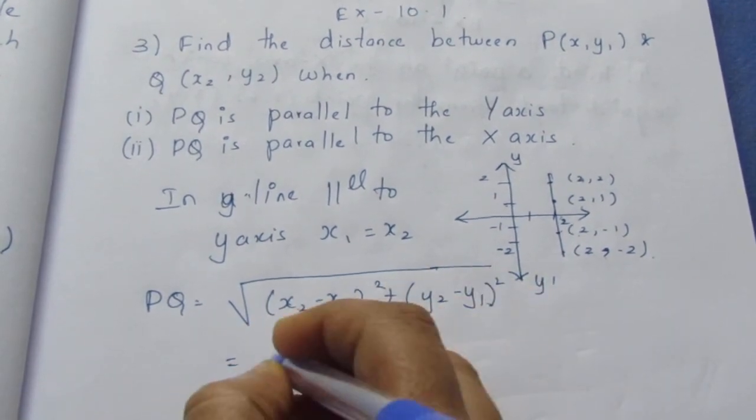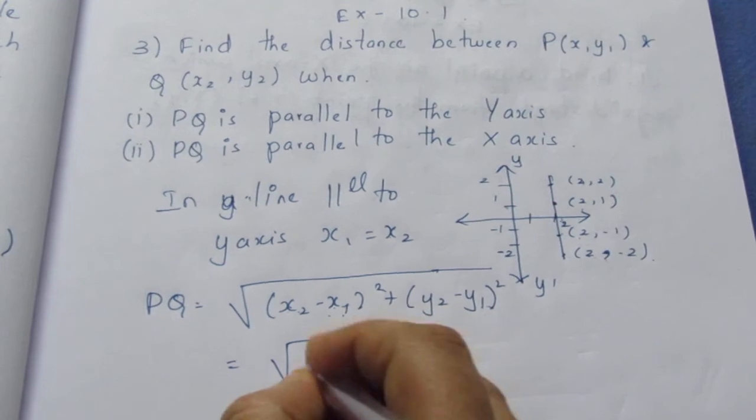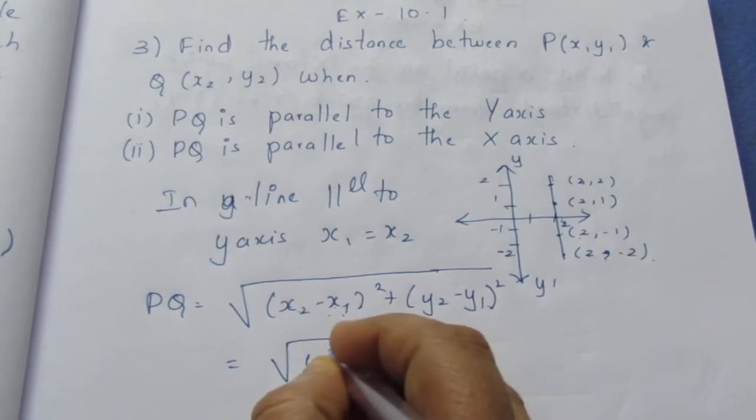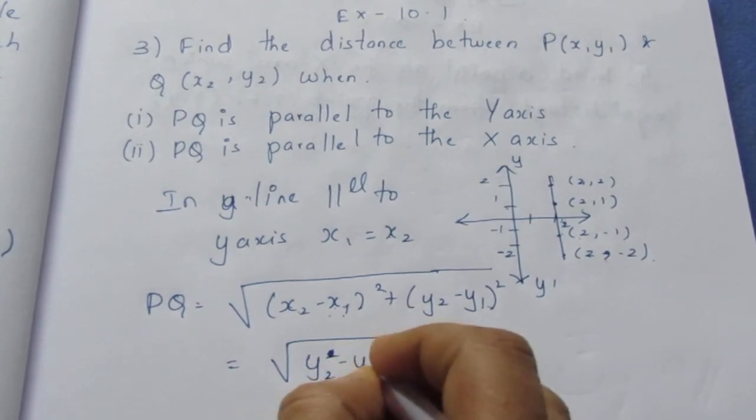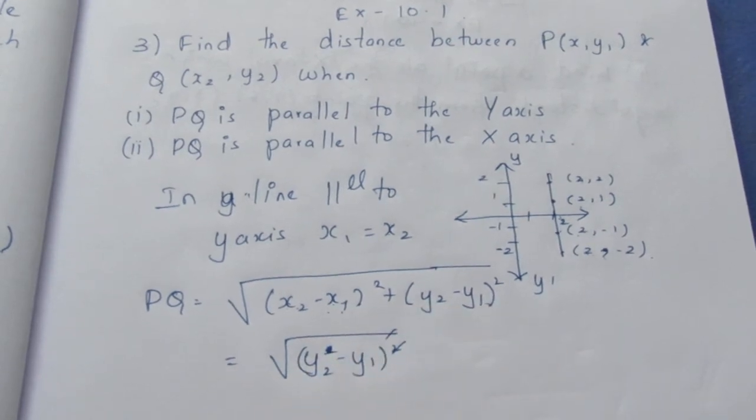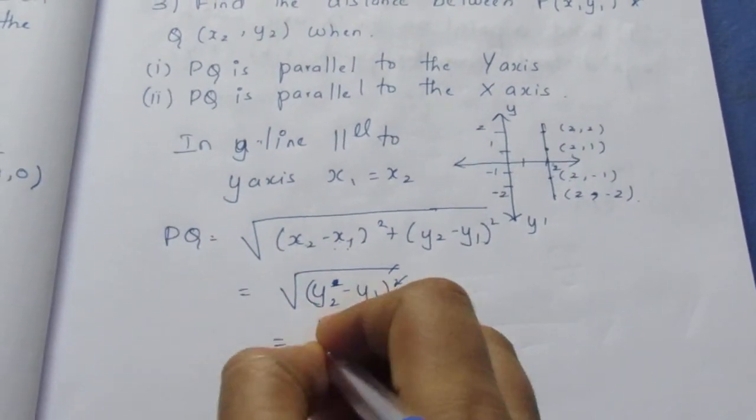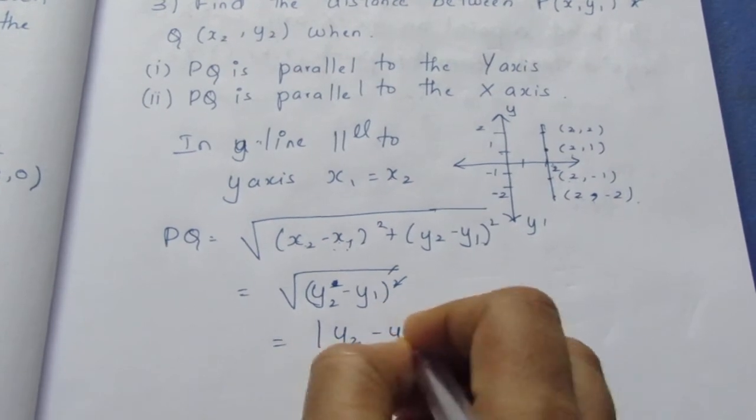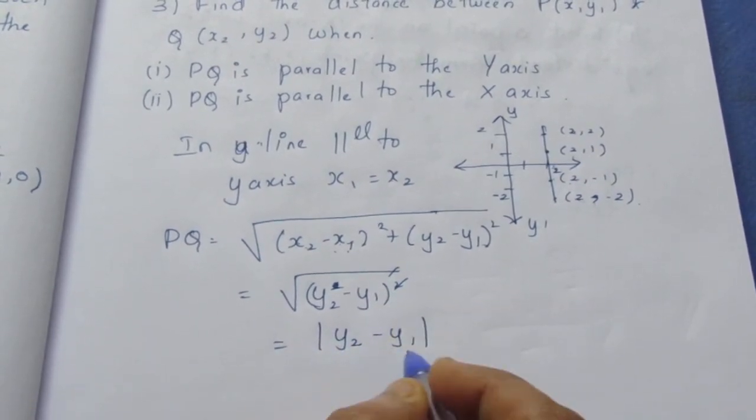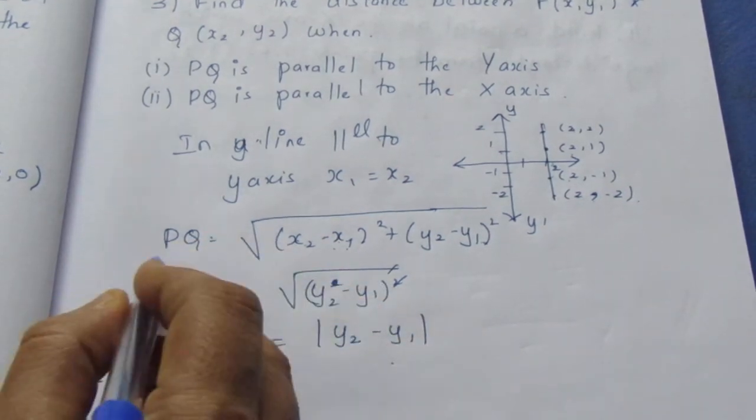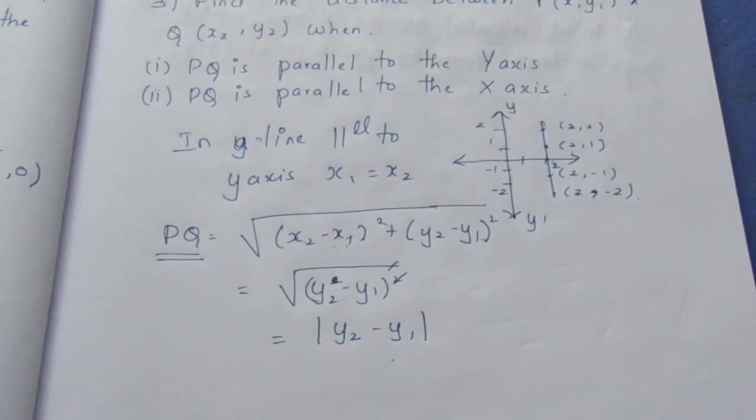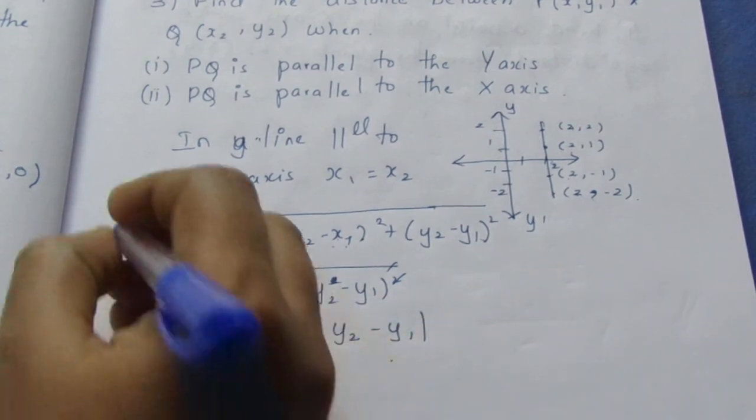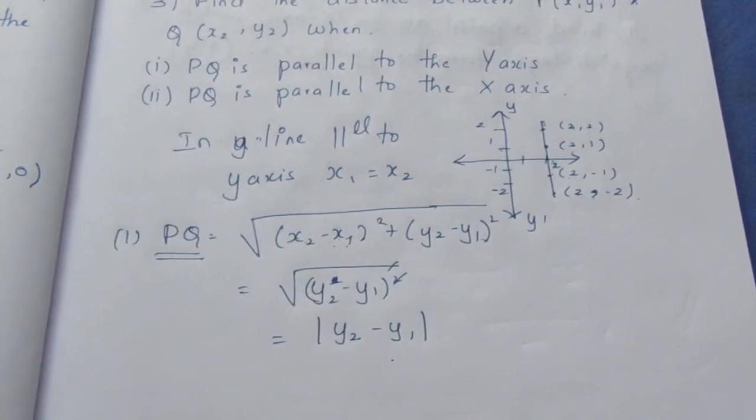So I can directly go with this thing that √[(y2 - y1)²]. Your square and root get cancelled. It becomes |y2 - y1|. Whatever the value is we need to write it in positive because we are writing the distance. The distance will always be positive. So mod will tell you that it is a positive value. This is your final answer when in the first subdivision that it is parallel to Y axis.